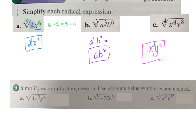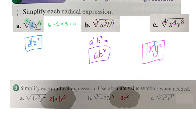Final answers: square root of 4 is 2; dividing exponents by 2 gives x to the first and y squared — you need absolute value around x since it's an even index with an odd result. For the cube root: cube root of negative 27 is negative 3; 6 divided by 3 gives c squared; answer is negative 3c² with no absolute value since the index is odd. For the fourth root: x⁸ divided by 4 gives x²; y divided by 4 gives y³ — that's odd with an even index, so absolute value is needed around y³.